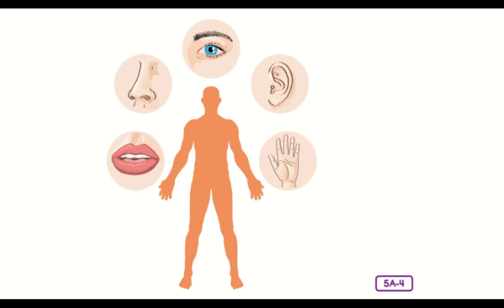Eyes pick up light and color and send pictures to the brain to help you see. Ears pick up vibrations from sound waves, carrying them to your brain to help you hear. Sensory cells in the nose react to chemicals in the air, sending messages to the brain to help you smell. Cells on the tongue react to chemicals in food, sending signals to the brain to help you taste. Receptors in your skin detect many different sensations, alerting your brain and spinal cord to feelings of pain, heat, cold, pressure, and touch.